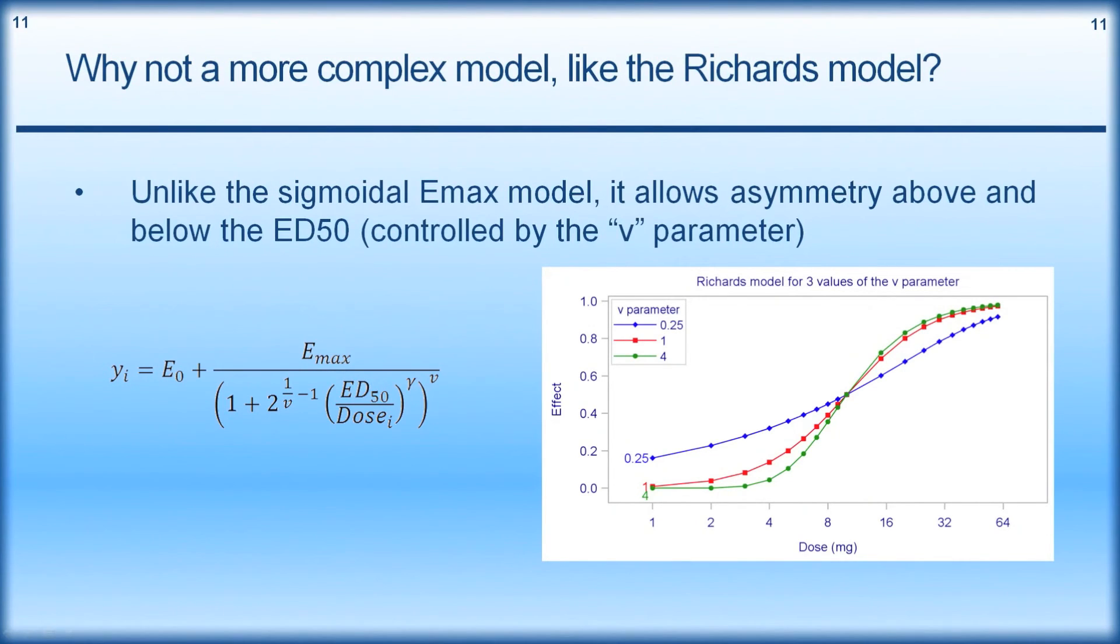Why not a more complex model like the Richards model? So unlike the sigmoidal Emax model, it allows asymmetry above and below the ED50 controlled by the V parameter. There's a number of different parameterizations for the Richards model. So here in red, we have a Hill coefficient equal to 2 with the V parameter equal to 1. So this is essentially the nested structure. When V is 1, it's a sigmoidal Emax model. So this is the red line here. And if I cut out this part of the curve here and flipped it over, it would be the same as the red curve up here. Whereas if we contrast it and the V parameter is equal to 4, we see that the green curve and the red curve are quite similar here. But down at the bottom end, there's more of a separation. So the Richards model is allowing this asymmetry in the shape of this curve here, relative to the sigmoidal Emax model.